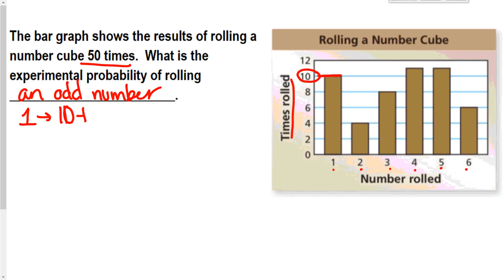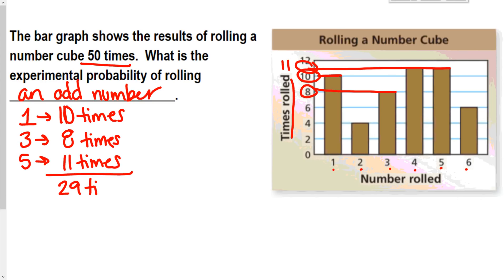I rolled a 3 eight times. And then I rolled a 5. Well, it's in between 10 and 12. So what is in between 10 and 12? That is 11. So in total, I rolled an odd 29 times.